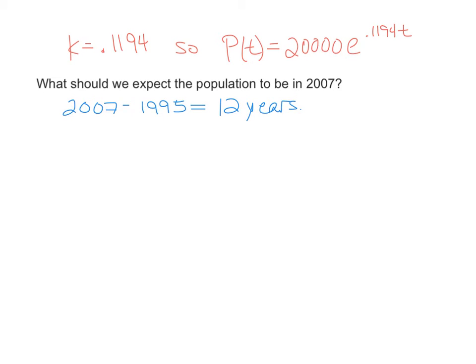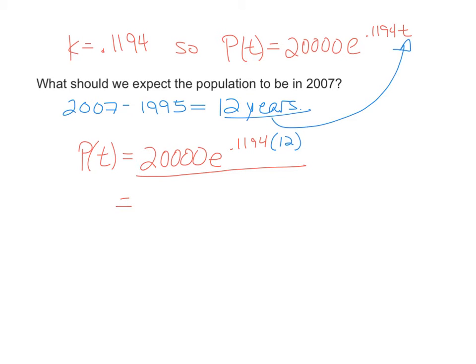Now we have a time measurement to substitute into the equation and get back a population. P(t) equals 20,000 e to the 0.1194 times 12 power. This entire expression simplifies down to 83,808 people.